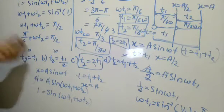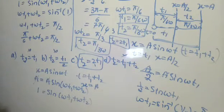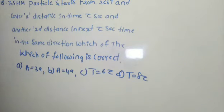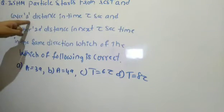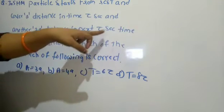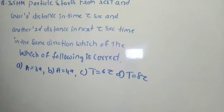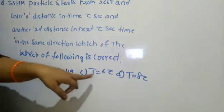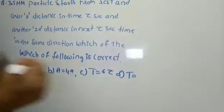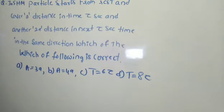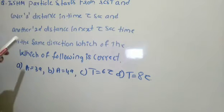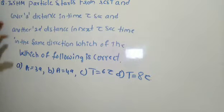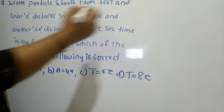So this is how you solve this problem. In the next problem: in simple harmonic motion, a particle starts from rest and covers a distance 'a' in 2 seconds, and another '2a' distance in the next 2 seconds in the same direction. The options are: A=3a, A=4a, T=6τ, or T=8τ.